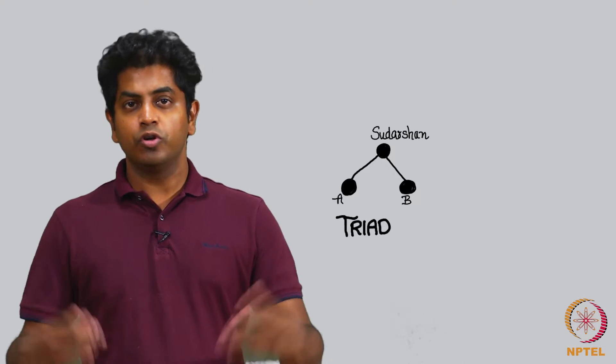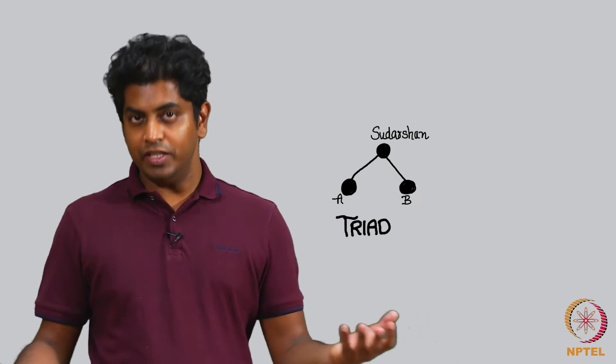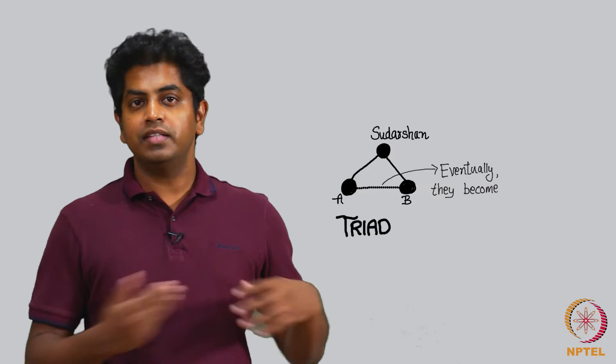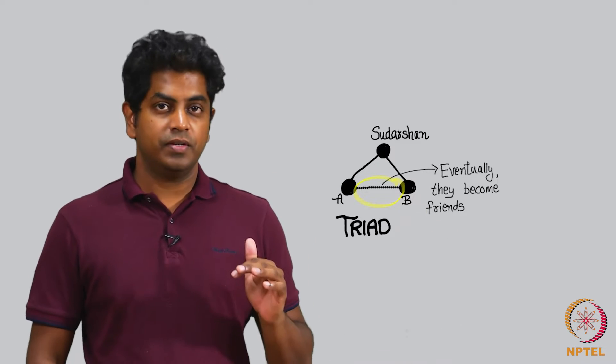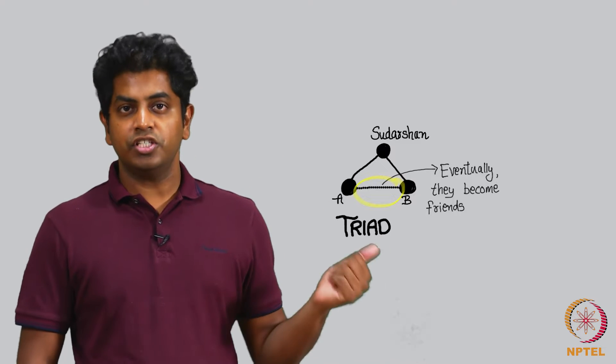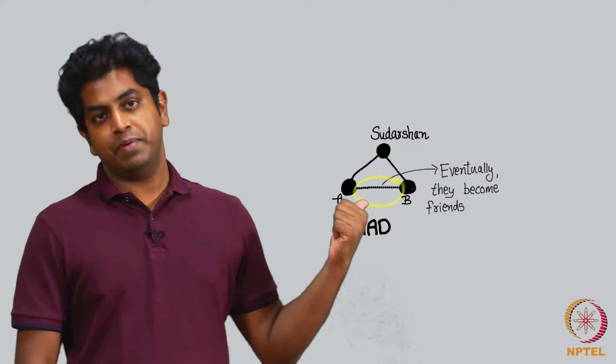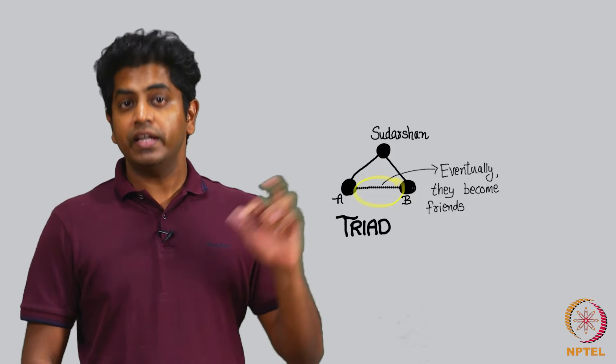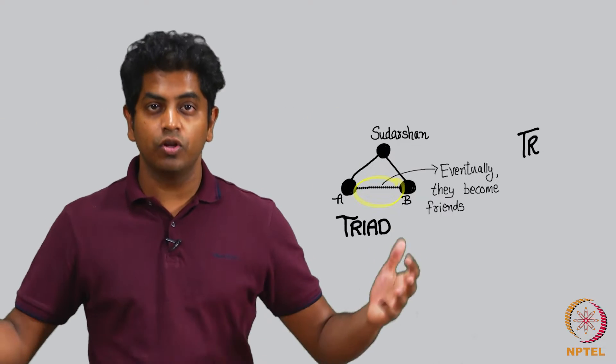What will happen? You have two good friends and they do not know each other. Eventually you can expect that they become friends with each other - A and B will know each other. This structure is called a triad, and the friendship that happens in this triad making it a triangle is called the triadic closure.